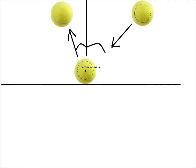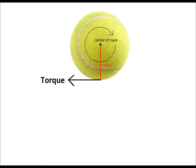But if the ball is spinning — for example, backwards — the ball will bounce more vertically. This is because the spin of the ball generates an angular force, also known as torque.